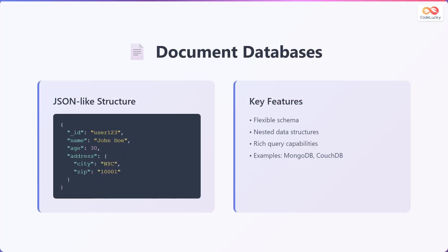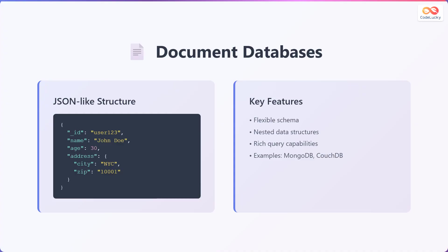Let's delve into document databases. These databases use a JSON-like structure to store data. For example, an object contains an underscore ID with the value user 123, the name is John Doe, age is 30, and the address is comprised of the city New York City and the zip code 10001. Key features include a flexible schema allowing for varied data structures within the same collection, nested data structures enabling complex data representation, and rich query capabilities offering powerful ways to retrieve data. Examples of document databases include MongoDB and CouchDB.